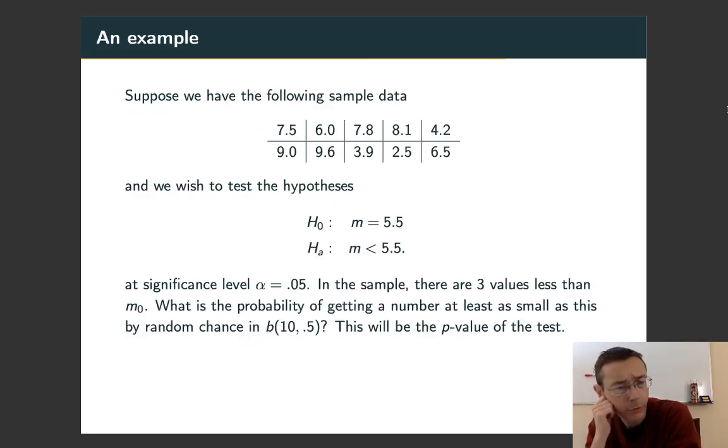This is all a lot more clear when we do an example. So here I have a sample of 10 data values, and I want to test a hypothesis that the median is actually equal to 5.5, the median of the population from which this data is taken. The alternative hypothesis will be that the median is actually less than that, and we'll test at significance level alpha equals 0.05.